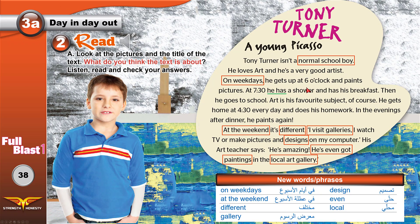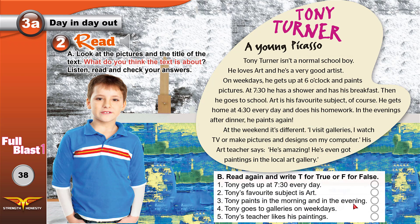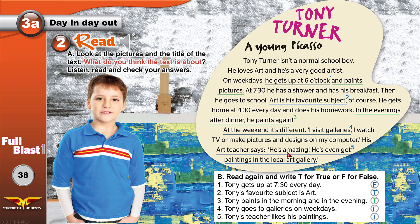Here are the new words from the reading in case you need them. Now write T for true or F for false. Tony gets up at 7:30 every day — false, he gets up at six o'clock. Tony's favorite subject is art — true. Tony paints in the morning and in the evening — true. Tony goes to galleries on weekdays — false, only at weekends. Tony's teacher likes his paintings — true, he says he is amazing and he has paintings in the local art gallery.